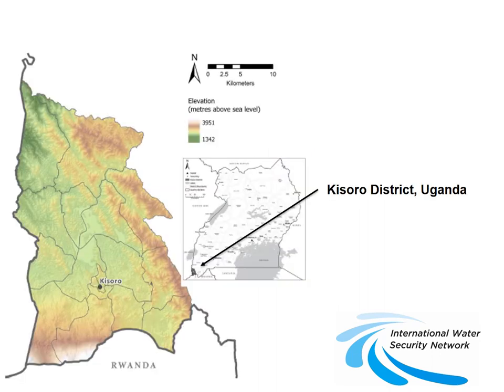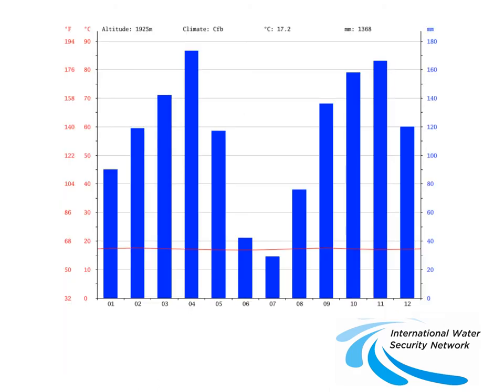The field site I'd like to talk about is located in the far southwestern corner of the East African nation of Uganda. Kisoro District is about as far southwest as you can go in Uganda without being in either the Democratic Republic of Congo to the west or Rwanda to the south. It is a relatively mountainous region, nestled in the Virunga Mountains that form the border zone between DRC, Rwanda, and Uganda.